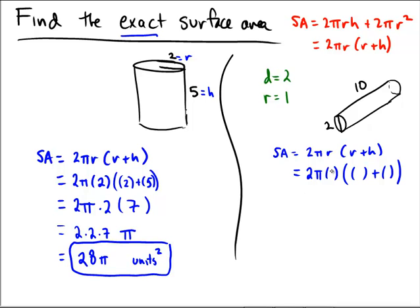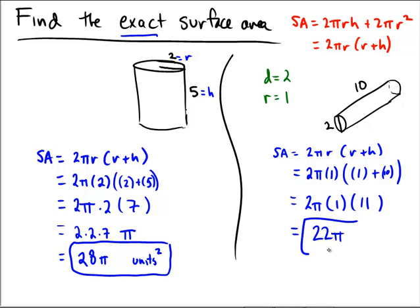So we have 2 × π × 1 × (1 + 10), since the height is 10. That gives us 2π × 11. Then 2 × 1 = 2 and 2 × 11 = 22, so the final answer is 22π.